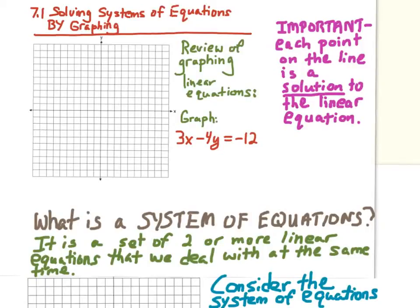This is a lesson on solving systems of equations by graphing. We're going to learn three different methods for solving them. Before we do that, I want to review graphing linear equations — it's an essential skill here. So we're going to start by graphing the linear equation 3x minus 4y equals negative 12. You might recall you could graph that by graphing the x and y intercepts, but because we'll sometimes need to see multiple points, we need to know our slope. So I want you to use slope-intercept form to graph these.